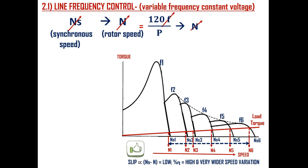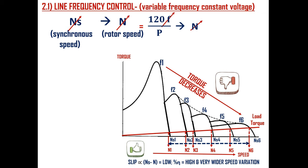One disadvantage of line frequency control is that the maximum available torque decreases with increase in frequency. We need to overcome this drawback to fully benefit from line frequency control. So let's see why the maximum available torque decreases with increase in frequency.